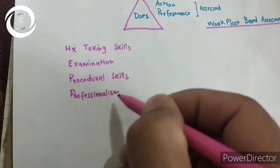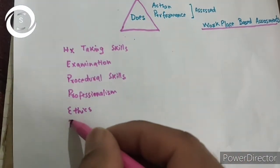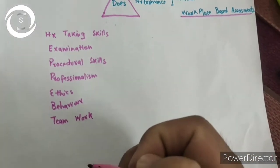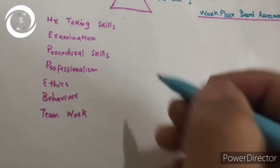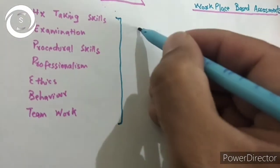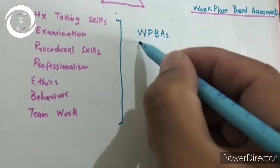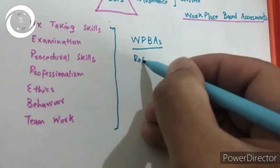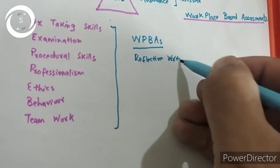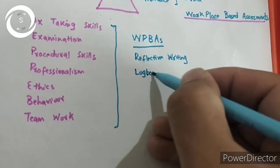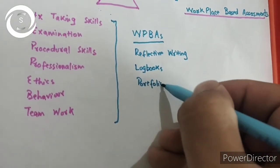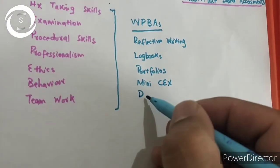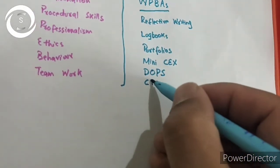What are these tools? These tools are logbooks, reflective writing, portfolios, Mini CEX (clinical evaluation), CBD (case-based discussion), DOPS (direct observation of procedural skills), DO-NEX (direct observation of non-clinical skills), and 360-degree multi-source feedback. All of these are included in workplace-based assessments.